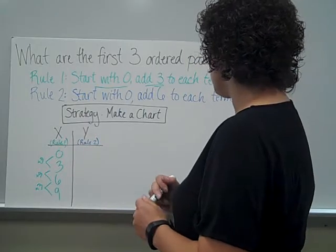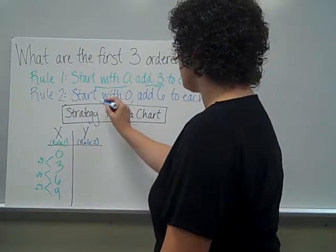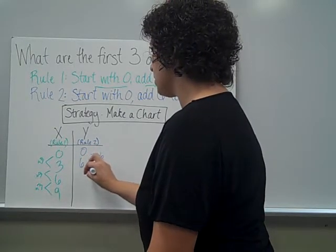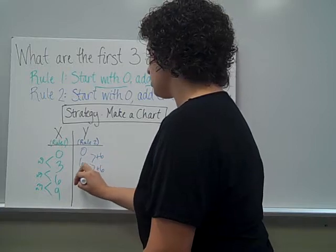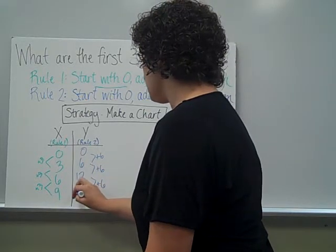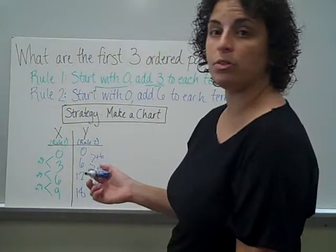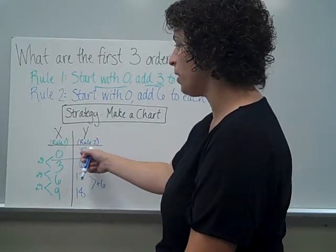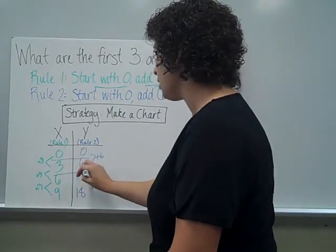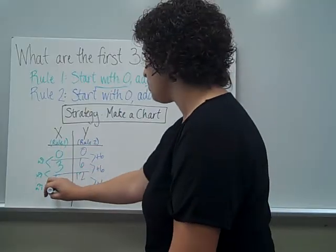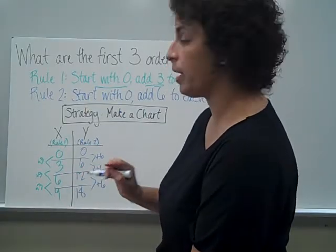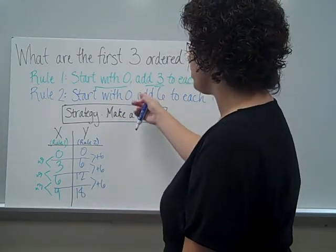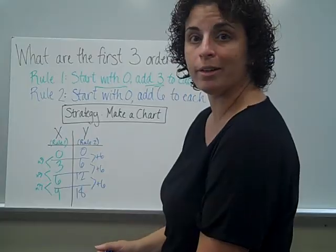Rule 2 said start with 0 and add 6 to each term. Starting at 0, adding 6: 0 plus 6 is 6, 6 plus 6 is 12, 12 plus 6 is 18. And what I've created here is a chart of ordered pairs. My first ordered pair is at 0, 0. My second point is at 3, 6. My third ordered pair is at 6, 12. And last, I have 9, 18. Simply by filling in these two rules, I've created ordered pairs.